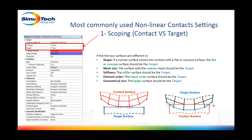The fourth rule: if there is a difference in element order — meaning one part has high-order elements and another has low-order elements — the low-order element body should be the target. Finally, the fifth rule: if there is a difference in geometry size, meaning one part is very small and the other is very large, the larger surface should be the target.